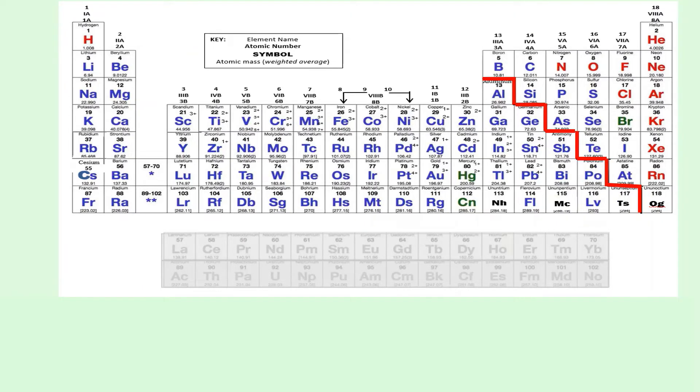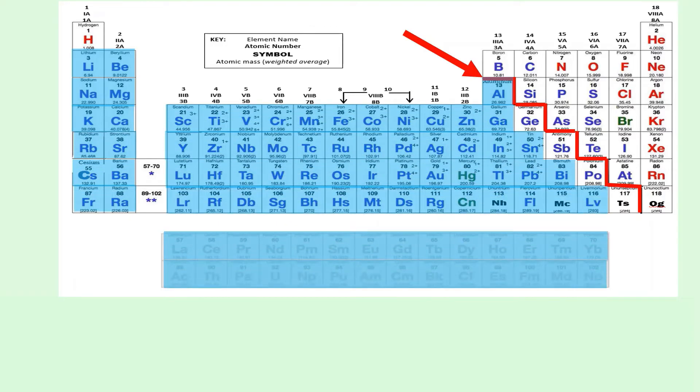The zigzag line on the right side of the periodic table separates the metals from the non-metal elements. The elements to the left of the zigzag line are considered metals, except for hydrogen, which is a non-metal.